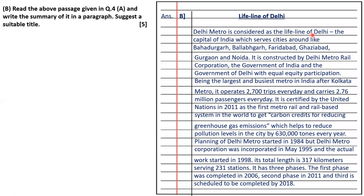Delhi Metro is considered the lifeline of Delhi, the capital of India, which serves cities like Bahadurgarh, Ballabgarh, Faridabad, Ghaziabad, Gurgaon and Noida. It is constructed by Delhi Metro Rail Corporation, the Government of India and the Government of Delhi with equal equity participation. Being the largest and busiest metro in India, it operates 2,700 trips every day and carries 2.76 million passengers daily. It was certified by the United Nations in 2011 as the first metro rail system in the world to get carbon credit for reducing greenhouse gas emissions, helping reduce pollution levels by 6,30,000 tons every year.